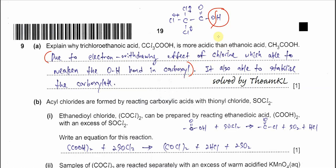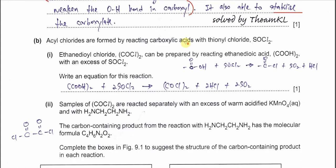After the O-H bond breaks, the carboxylate anion is formed. Because the electron-withdrawing effect is still present, it keeps the electrons on the anion and makes the carboxylate more stable — this is the stabilization effect of the electron-withdrawing group. So chlorine as an electron-withdrawing group has two effects: it weakens the O-H bond to release more H⁺, and it stabilizes the carboxylate, making it less reactive so it is less likely to recombine with H⁺ to reform the acid.